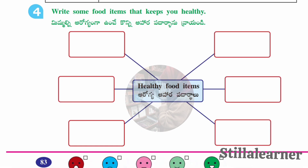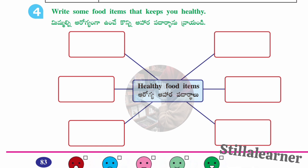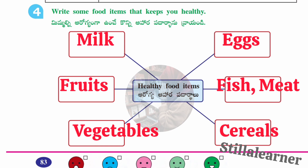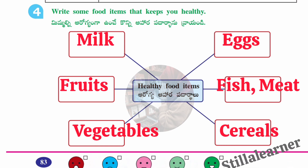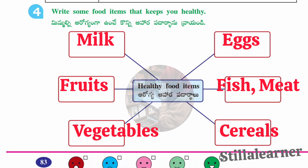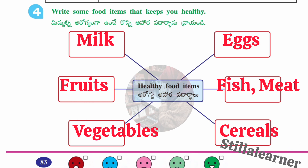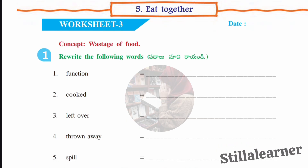The fourth section asks: write some food items that keep you healthy. The answers are: milk, eggs, fruits, fish and meat, vegetables, and cereals. Stay fit always!